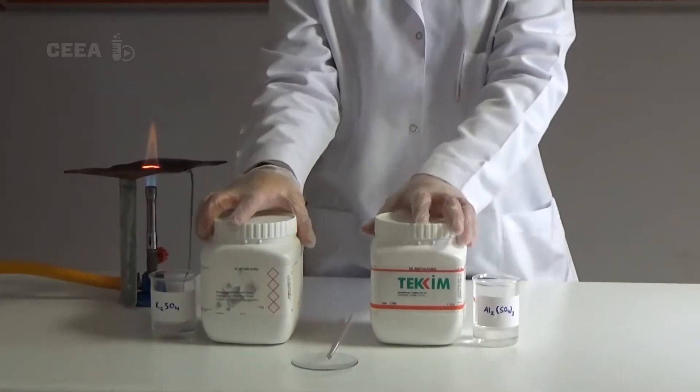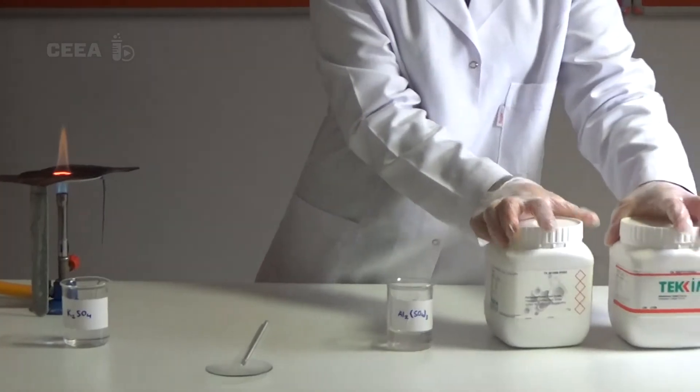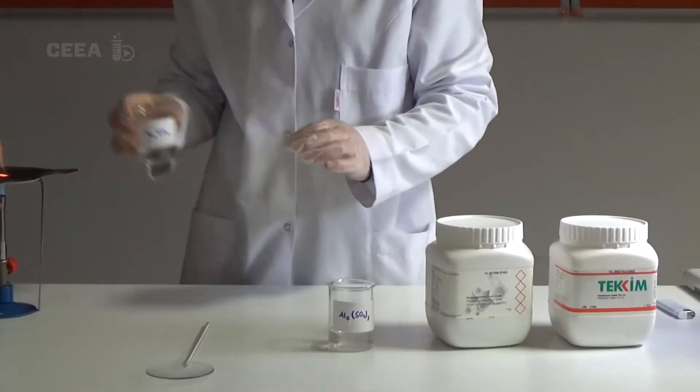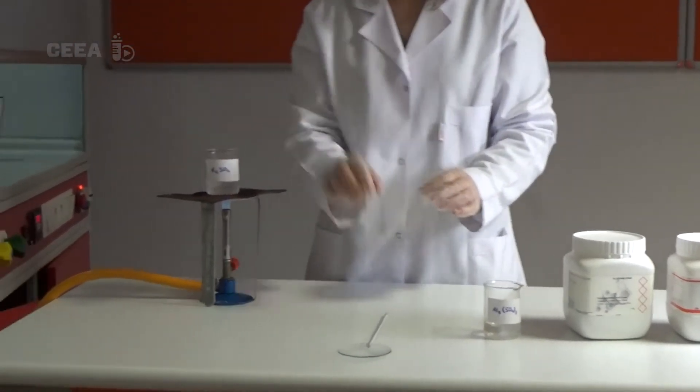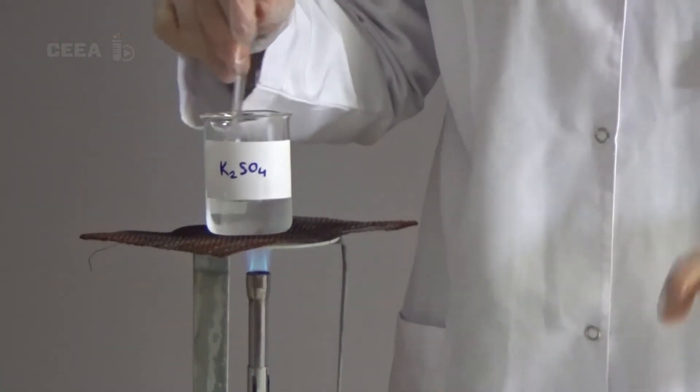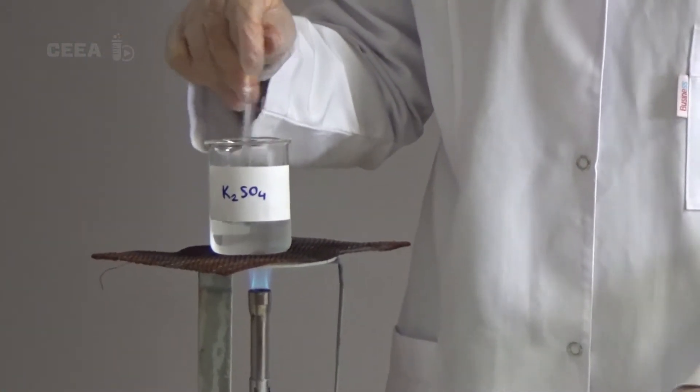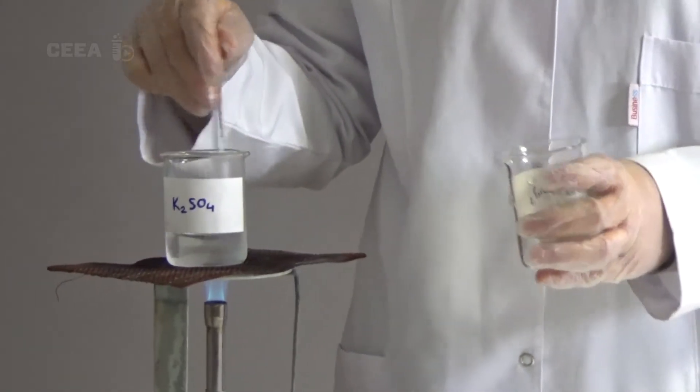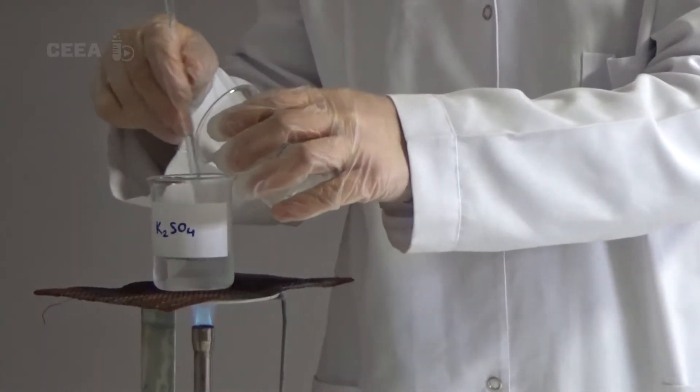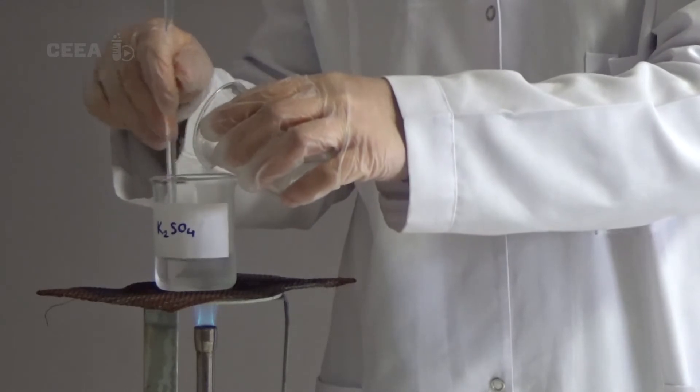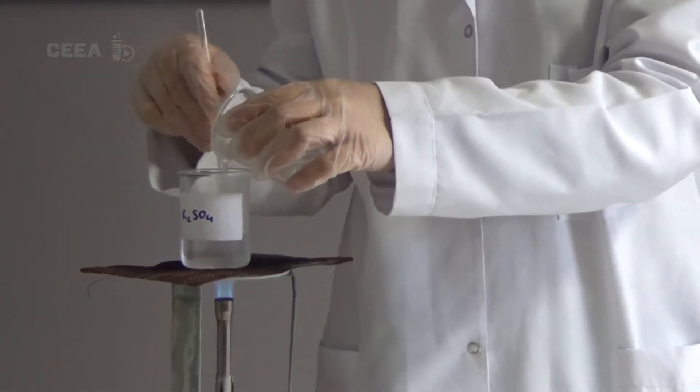Prepare separately watery solutions of solid potassium sulfide and solid aluminum sulfide with equal molecules. Add aluminum sulfide solution into potassium sulfide solution.